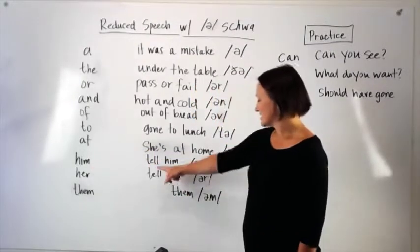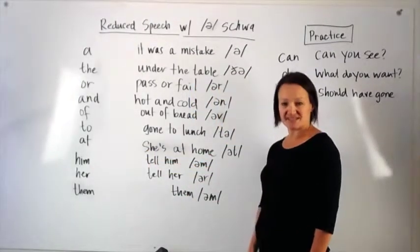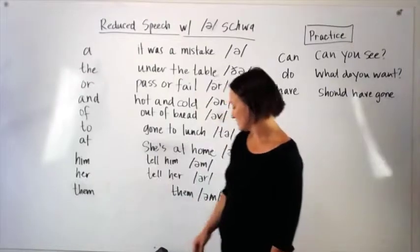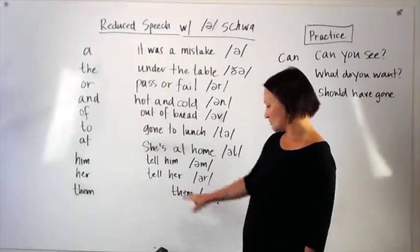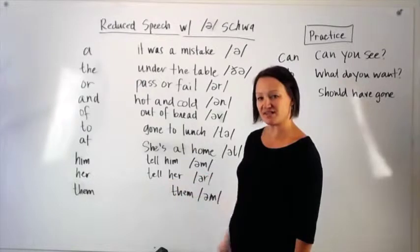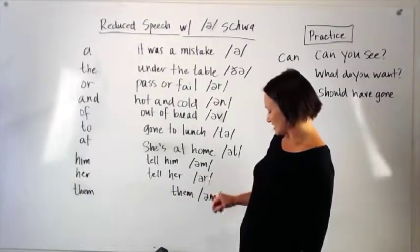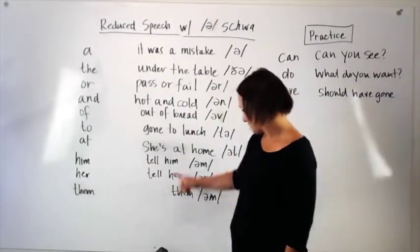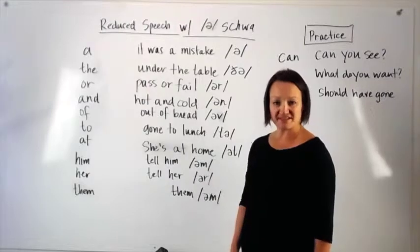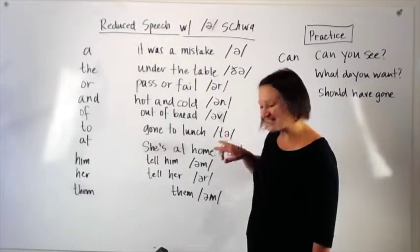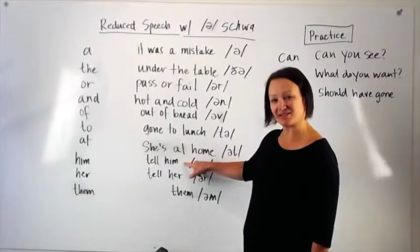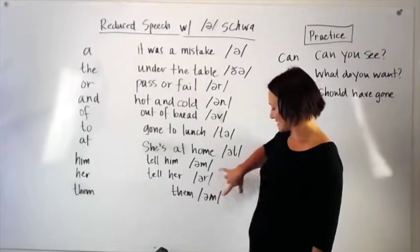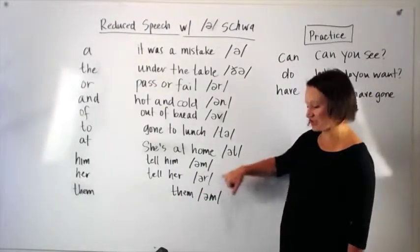Him. Tell him. So I'm only saying im. Her. Tell her. So we're not really pronouncing this first sound. Tell her. So it sounds more like this, with the schwa and an r. And the last one here is them. Tell them. Tell him. That's what we would say. It sounds exactly the same as this one. They sound exactly the same. You'll see the pronunciation here is exactly the same.